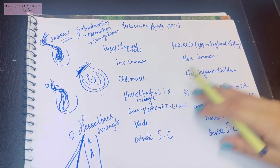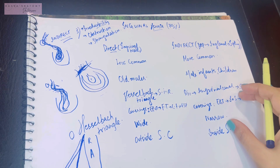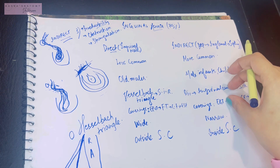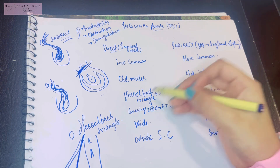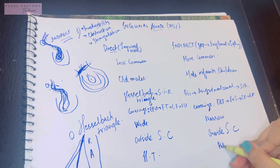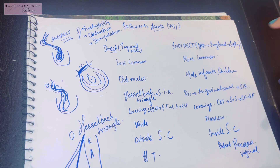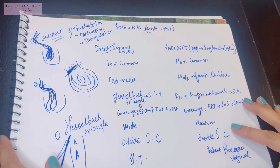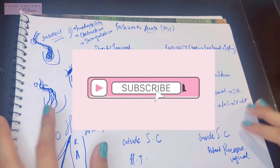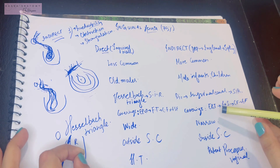That was an overall view of inguinal hernias. The most important points are the difference between direct and indirect inguinal hernias, their definitions, and their etiologies. Direct inguinal hernia occurs through the Hesselbach triangle, mostly in old males, while indirect inguinal hernia occurs due to a patent processus vaginalis, mostly in male infants and children.